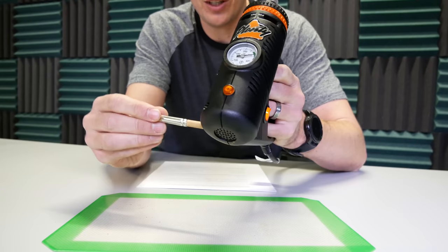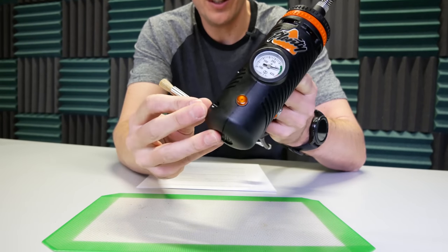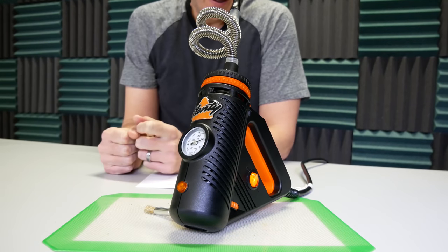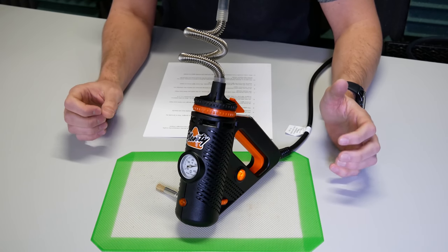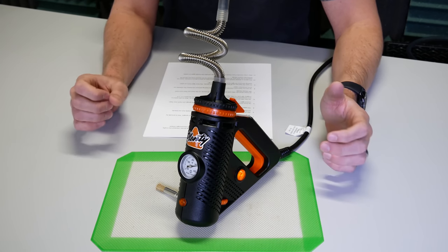You might have noticed I'm using the cleaning brush to keep the Mighty upright. This is actually by design - the brush fits perfectly in the screw hole and works just like a little kickstand. The Plenty is best described as a home portable. It's technically a portable but not exactly something you're going to carry with you all day.